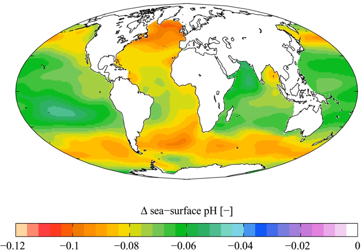The increase in concentrations of dissolved carbon dioxide and bicarbonate, and reduction in carbonate, are shown in a Bjerrum plot.